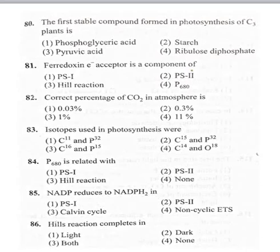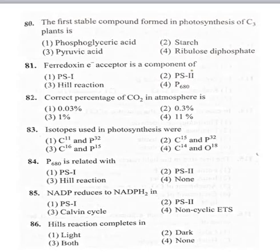84th bit: P680 is related with — option 1 photosystem 1, option 2 photosystem 2, option 3 hill reaction, option 4 none. The pigment that absorbs red light at 680 nm is called photosystem 2, and the pigment that absorbs red light at 700 nm is called photosystem 1. So P680 is related to photosystem 2, and P700 is related to photosystem 1. Correct option is photosystem 2.